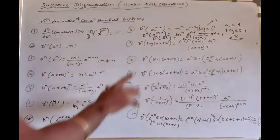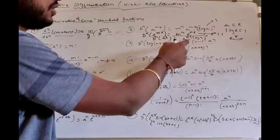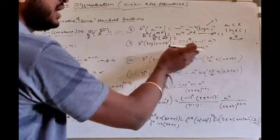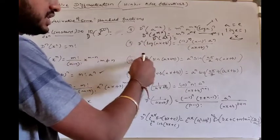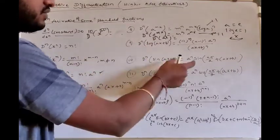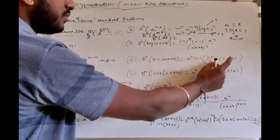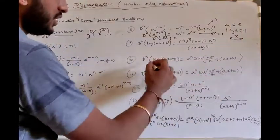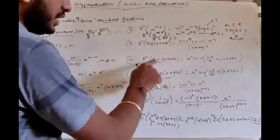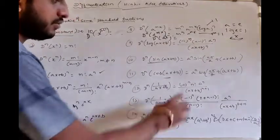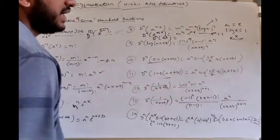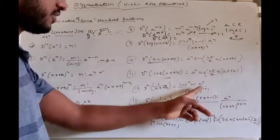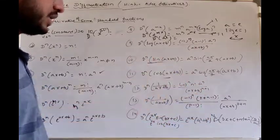The nth derivative of log(ax+b) is (-1)^(n-1) · (n-1)! · aⁿ / (ax+b)^n. The nth derivative of sin(ax+b) is aⁿ · sin(nπ/2 + ax+b). The nth derivative of 1/(ax+b) is (-1)^n · n! · aⁿ / (ax+b)^(n+1).